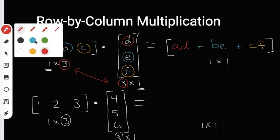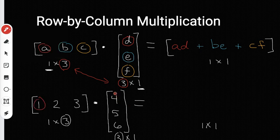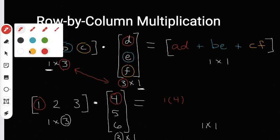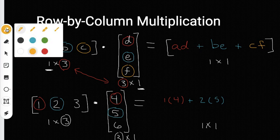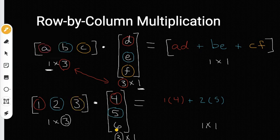The first thing I'm going to do is circle my first components: my 1 and my 4. If I multiply 1 by 4 I'm going to get 1 times 4, but I'll just keep it as 1 times 4 for now. The next thing I'm going to do is circle the second component in blue — the 2 and the 5 — and multiply these to get 2 times 5. Then the third component I'm going to circle in yellow: the 3 and the 6. If I multiply those I'm going to get 3 times 6.